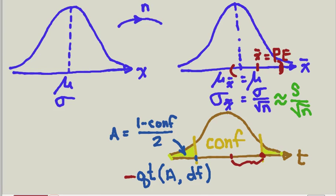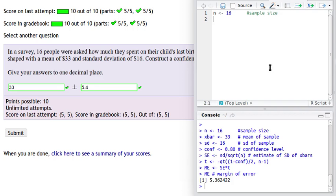Okay, let's do those calculations. So let's pull in a copy of R Studio and start to put in the information. We know that our sample size is N, that the mean of our sample is 33, and that the standard deviation of our sample is 16.